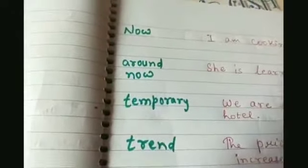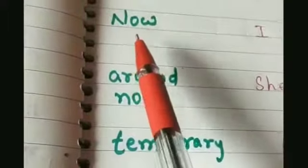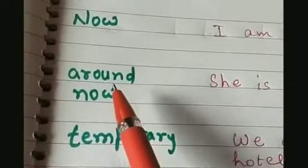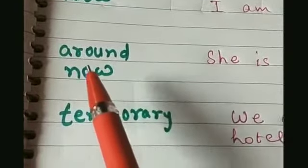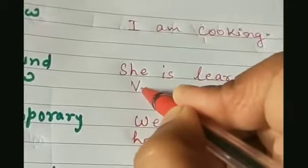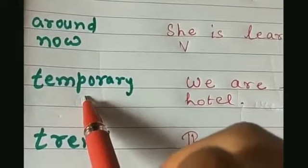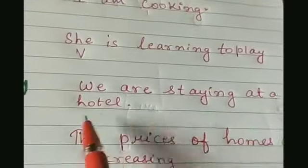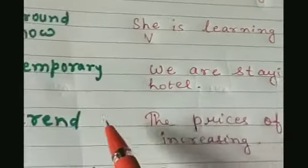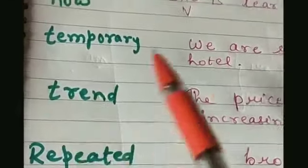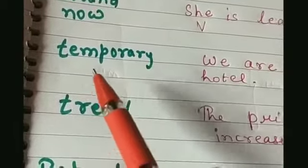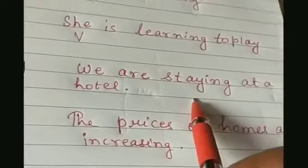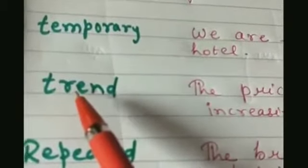Present continuous tense is used for an action which is ongoing now — like I am cooking, right now what am I doing? I am cooking. It is also used for actions happening around now, like she is learning to play violin. It is also used for temporary actions, like we are staying at a hotel — we have a house but for a certain period of time we are at a hotel.